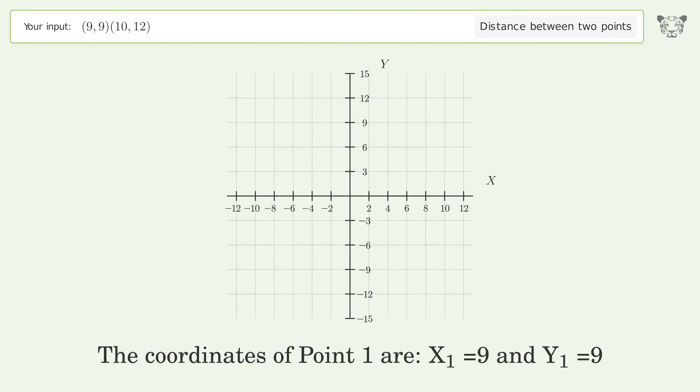The coordinates of point 1 are x1 equals 9 and y1 equals 9. The coordinates of point 2 are x2 equals 10 and y2 equals 12. d is the distance between the two points.